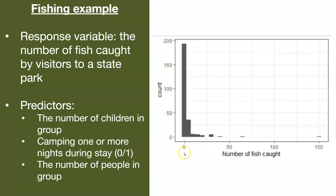You can see there are a lot of fish being caught where zero fish were caught. But there are many others where multiple fish were caught, including one group that caught over 150 fish in their outing.